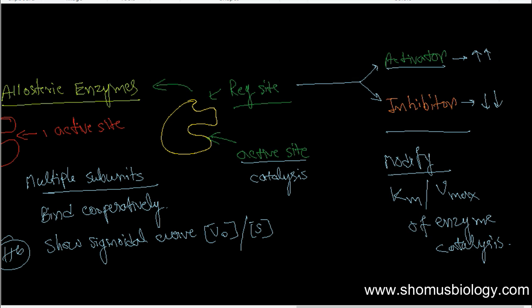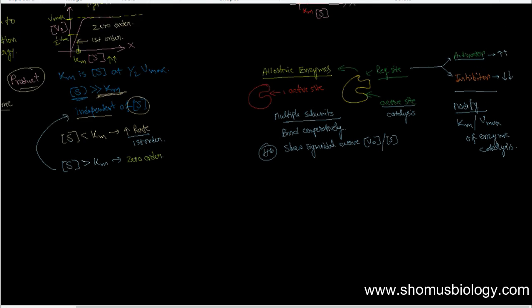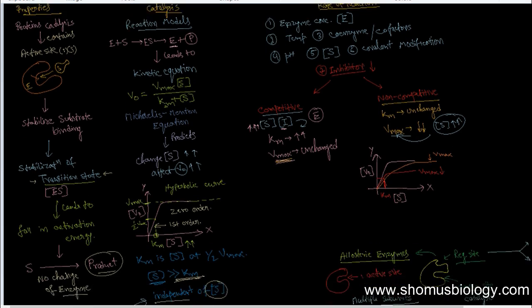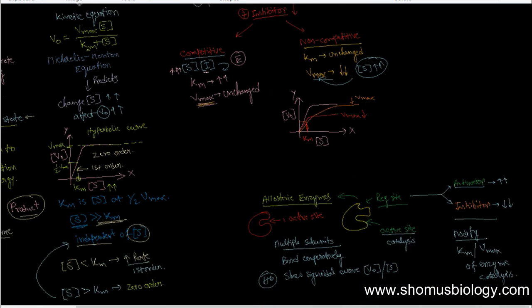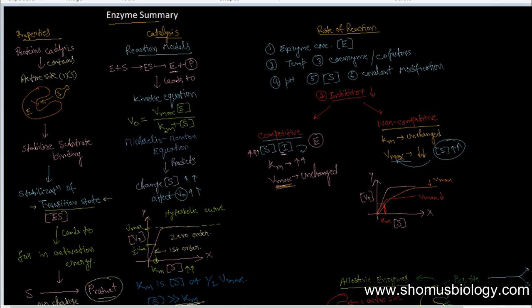So this is the summary of enzyme reactions — all done! If you zoom out you can clearly see the entire enzyme summary written on a single page, covering enzyme properties, catalysis, rate of enzyme reactions, and allosteric regulation. If you like this video, please hit the like button, share it with your friends, and subscribe to our channel for more videos. Thank you, bye!